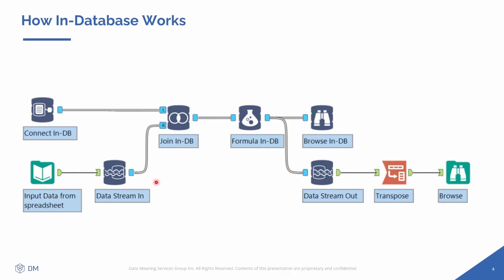And how can we do that? We can use the Data Stream In tool to stream in data that I have locally. On this example, I have some input data from an Excel spreadsheet — I'm streaming in this data into my database, creating a temporary table, and then using this temporary table to join with my other table on the database. This will speed up the process. Imagine that you have a large data set on your database and you just need to join it with a simple Excel spreadsheet.